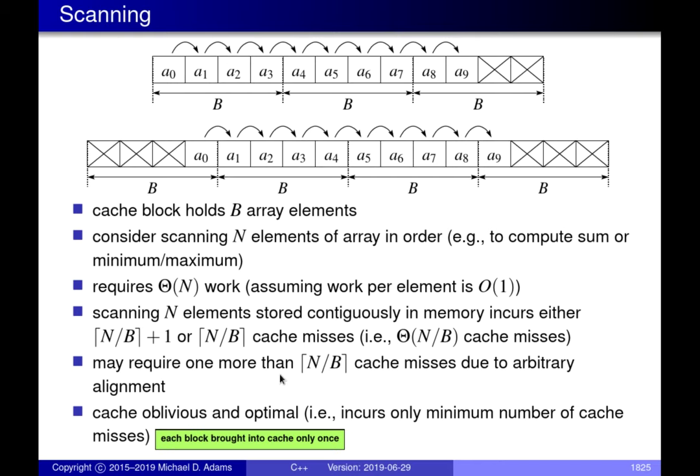This particular scheme is cache oblivious because there's nothing in the algorithm using knowledge of cache parameters. It's also optimal because the data being accessed is only brought into the cache once — we don't bring any cache blocks in multiple times. This is the best we can do. In order to scan through the array we must bring in each cache block containing array data once, and for an optimal solution we only want to bring each block in once, which is exactly what we do.